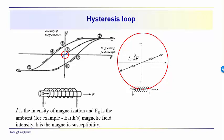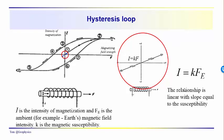There's a linear relationship between the intensity of magnetization and the magnetizing field. This constant of proportionality is referred to as the susceptibility. So we are generally working in this region of the plot where we don't have to worry about hysteresis effects, and we have a nice linear relationship between the intensity of magnetization and the intensity of the magnetizing field.